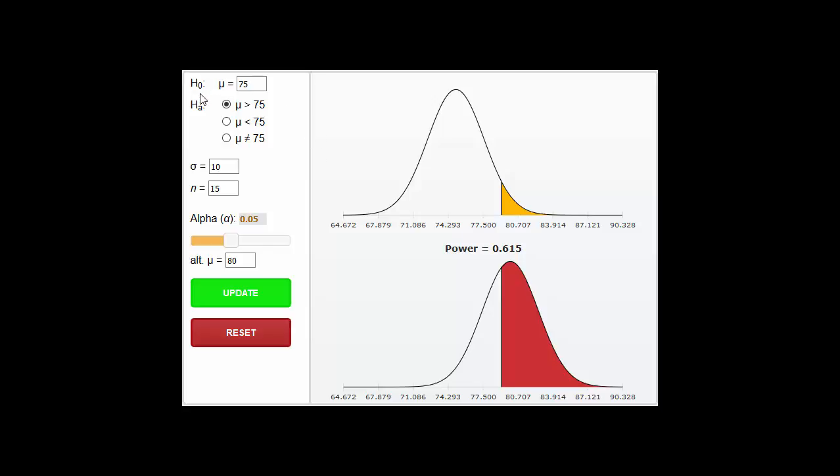So I have an H0, a null hypothesis that the mean is equal to 75. I have a known population standard deviation of 10 and a sample size of 15.